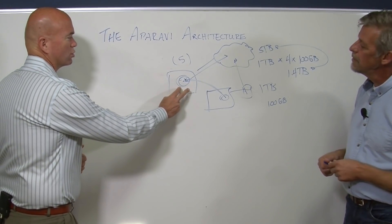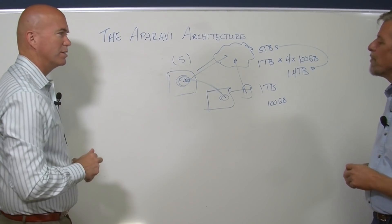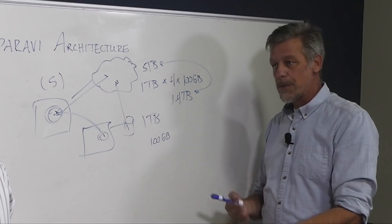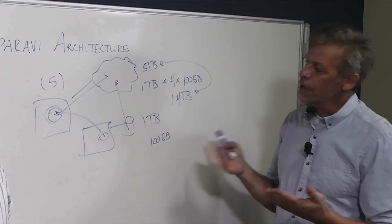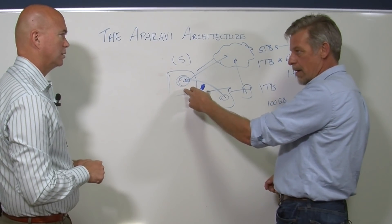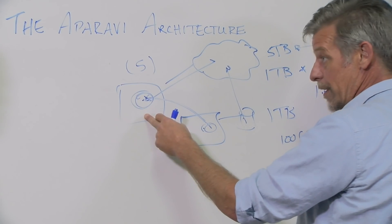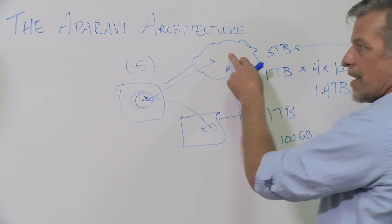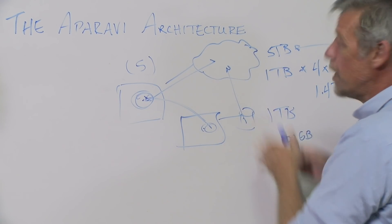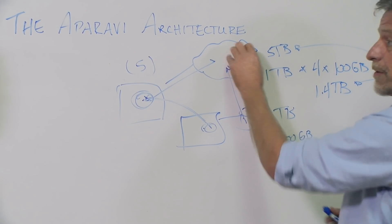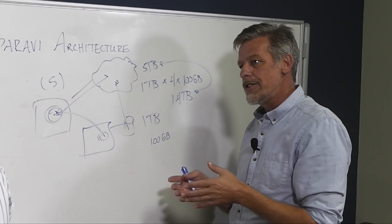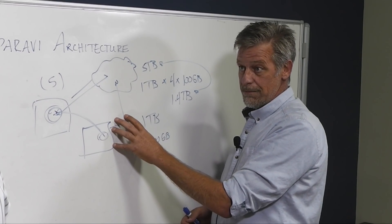So how do I control growth of this appliance? Each file is classified and has a retention period. So if your retention period is three years, a copy will be maintained on the appliance for three years and then deleted. Same thing in the cloud. No longer do you have to keep images forever — we can actually remove individual files that have passed their retention period.